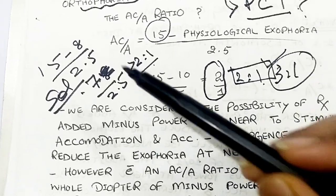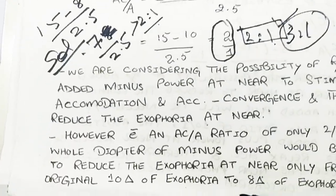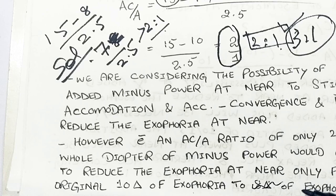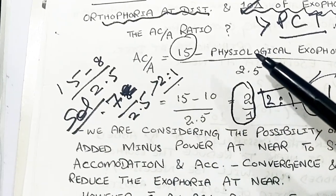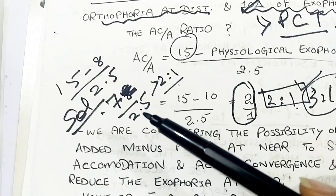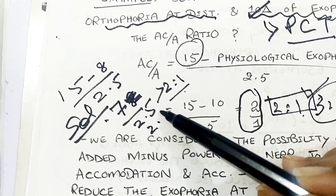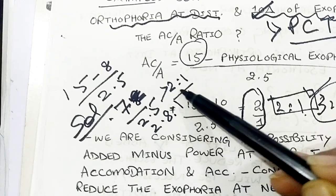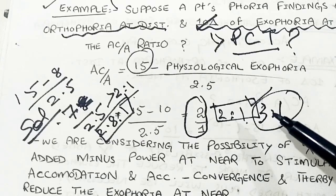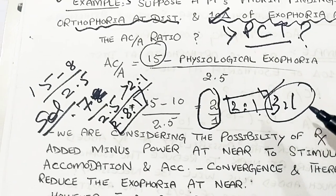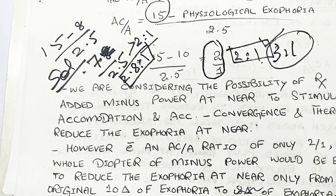For example, if a patient is having 8 prism diopters of physiological exophoria, then applying the formula: 15 minus 8, divided by 2.5, gives 7 divided by 2.5, which equals approximately 2.8 to 1 — near about a 3 to 1 ratio — and so the patient gets relief of convergence insufficiency symptoms.